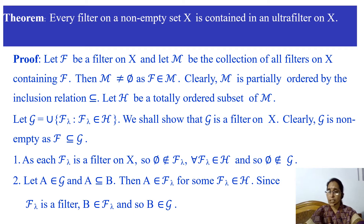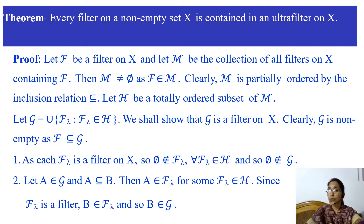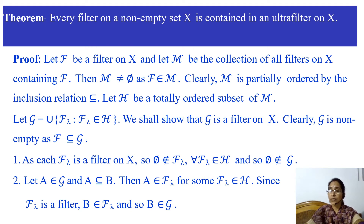Clearly, M is partially ordered by the inclusion relation. Let H be a totally ordered subset of M. Recall that H is a totally ordered subset of M means for any two members F1 and F2 in H, either F1 is contained in F2 or F2 is contained in F1 — that is, any two elements are related.